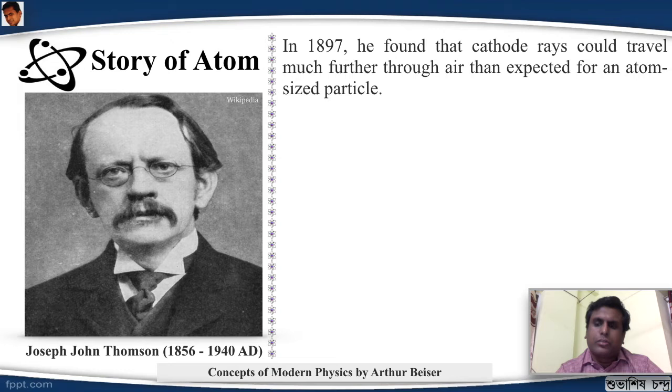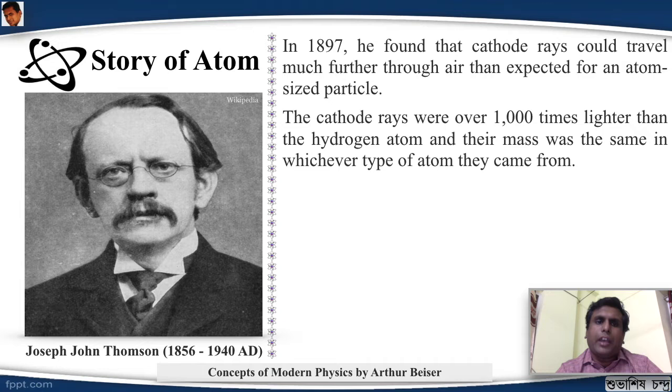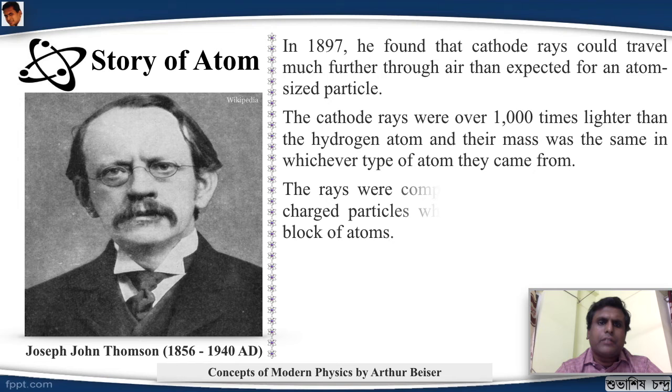According to the knowledge he gained from this, in 1897 he said that cathode rays could travel much further through air than expected for an atom-sized particle. Also, these cathode rays were one thousand times lighter than the hydrogen atom, and the mass was same whichever type of atom they came from. That is, he changed the metals, he used different metals as cathodes, and he found the same q by m.